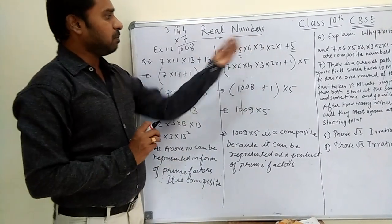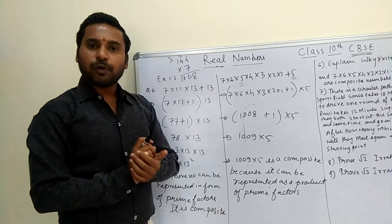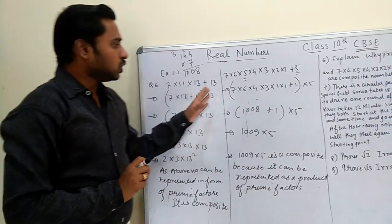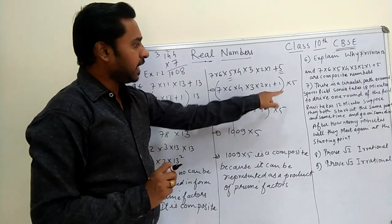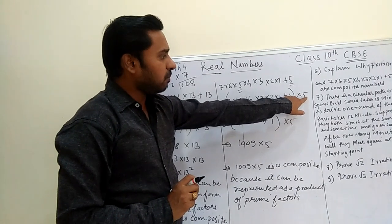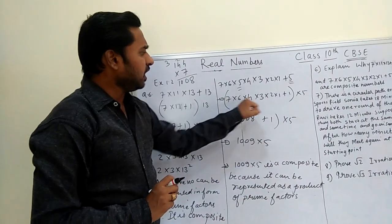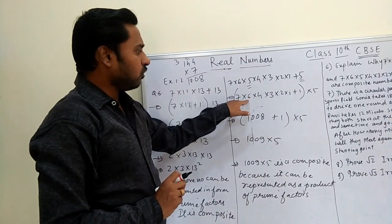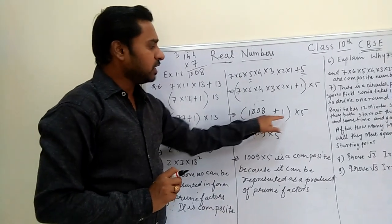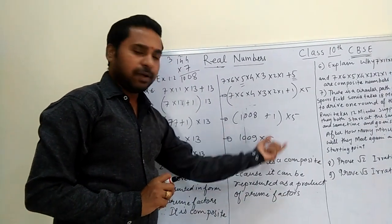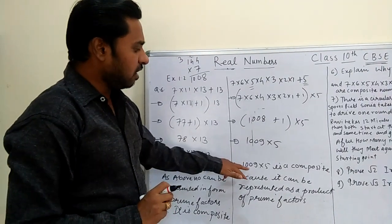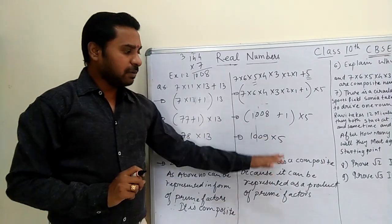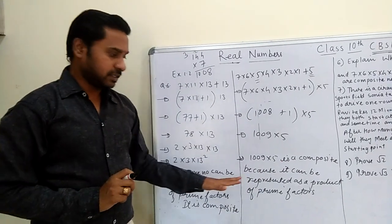Let me repeat this. We have the number 7 × 6 × 5 × 4 × 3 × 2 × 1 + 5. We take 5 as common. It can be represented as a product of its prime factors. Therefore it is a composite number.